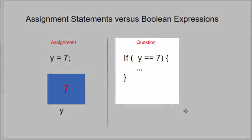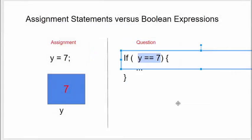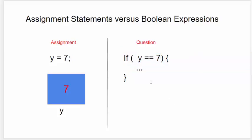On the right, we see another example, this time with two equal signs of what is known as a Boolean expression. I have highlighted the Boolean expression here inside the if statement. Compared to an assignment statement, which causes a command or a directive to be carried out, a Boolean expression asks a question, is it true that y is equal to 7? And if it is, we're going to execute the code labeled inside the if block.